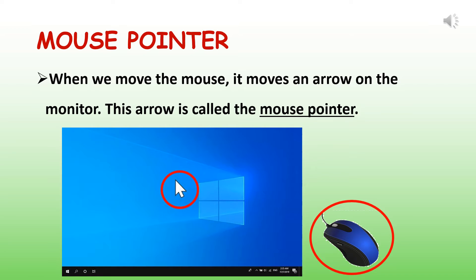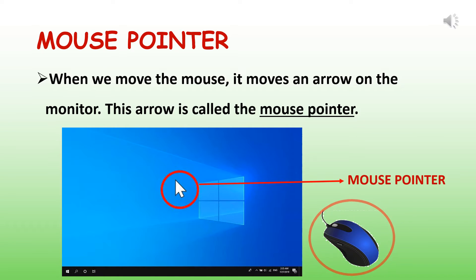Let us learn what is a mouse pointer. When we move the mouse on the desk or on the table, it moves an arrow on the monitor. By default it is a white colored arrow, and this arrow is called the mouse pointer. The mouse pointer moves in almost the same direction as you move the mouse on your desk.